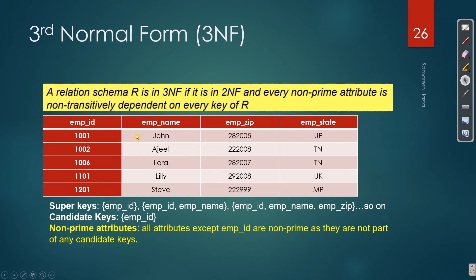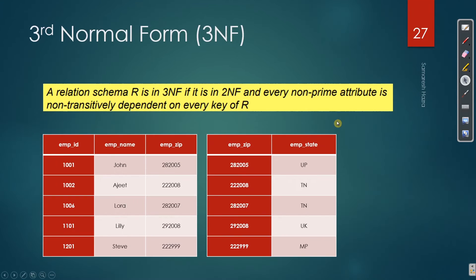Employee ID determines name, and zip code determines state. Is this in 1NF? Yes, it is in 1NF - there are only atomic values and no composite attributes. Is it in 2NF? Yes, 2NF - because all non-key attributes are fully functionally dependent on the key. Is it in 3NF? No, it is not in 3NF. There is a transitive dependency: employee ID → zip → state. So we decompose into two tables: Table 1 has employee ID, employee name, and employee zip. Table 2 has zip and state. Now it is in 3NF because there is no transitive dependency.